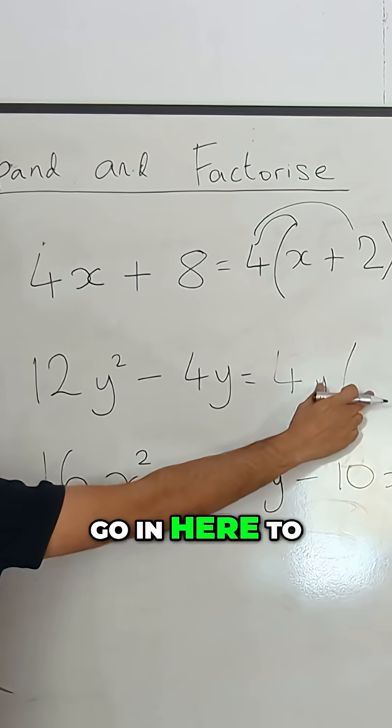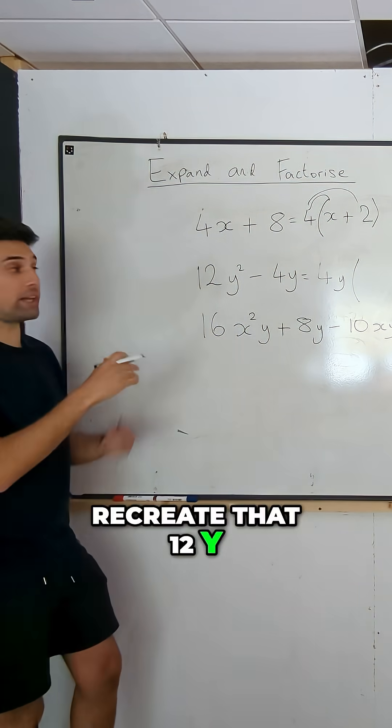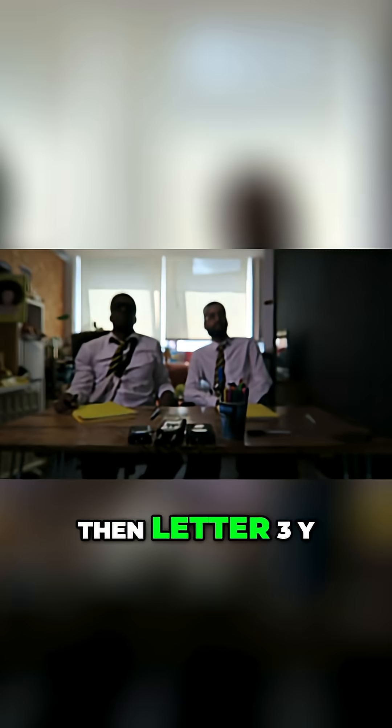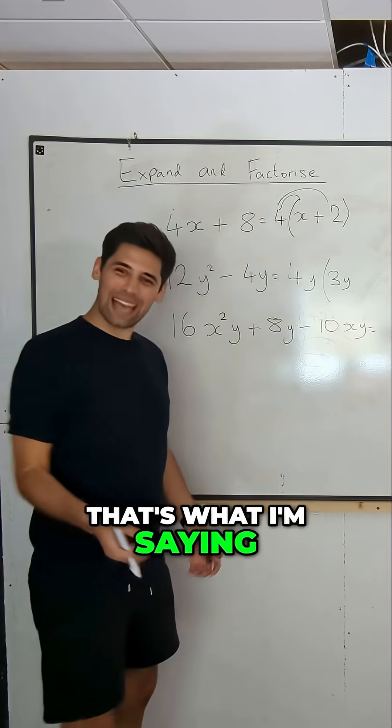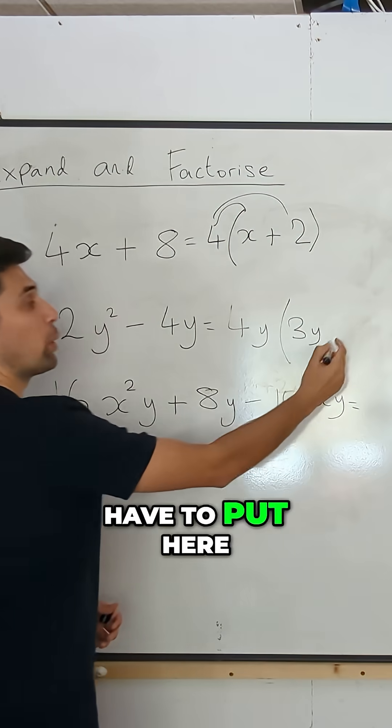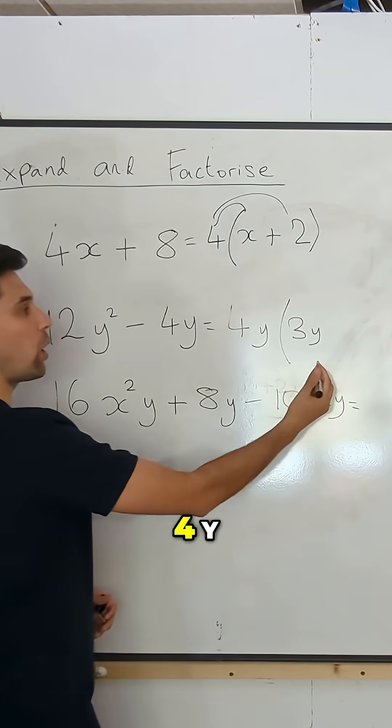Now what has to go in here to recreate that 12y? Number first, then letter. 3y. 3y, exactly. Oh, maybe I was right. You were. That's what I'm saying - elements were right, it's just not exactly. Yeah. So what do we have to put here to create the negative 4y? Minus one.